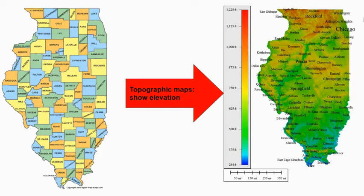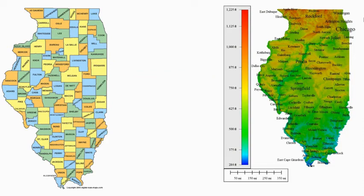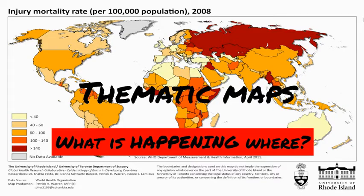According to this political map, what counties border Kane County? According to the topographic map, does the elevation generally increase or decrease as you move to the southern part of Illinois from St. Charles? Thematic maps emphasize one theme or topic to show patterns of data about humans, organisms, or the land. Demographic data is often expressed using thematic maps in order to understand patterns and explain what is happening in places so we can solve problems.